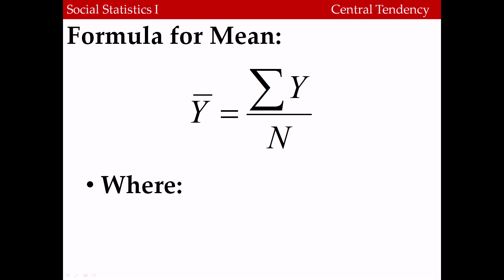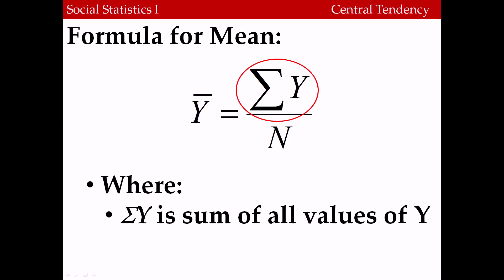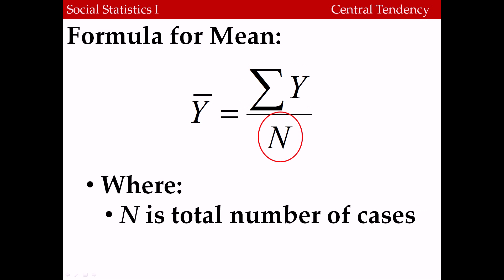Here's the formula for the mean. Suppose we were trying to take the mean of some variable y. We would call the mean of y, y-bar, because we write an overbar over the letter y — that denotes some kind of an average or mean. The formula tells us to take the sum of the values of the variable y, where the Greek letter sigma is used to indicate summation, and then divide that value by n, the total number of cases.